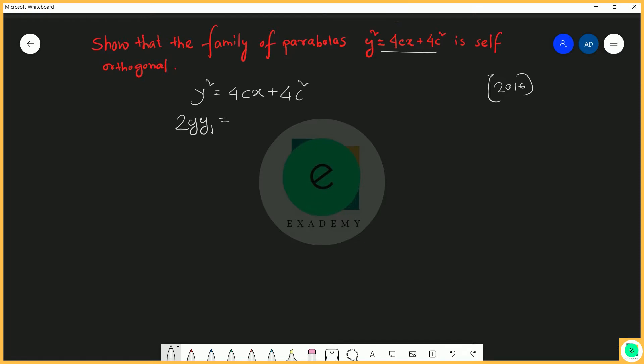So C equals to y·y₁ by 2, where y₁ is dy/dx. Now we'll substitute the value of C back into the equation.